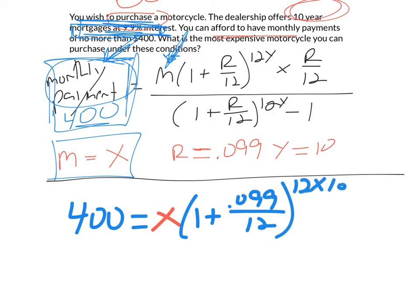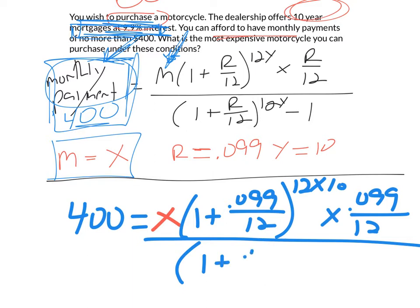so that's 12 times 10, times another R/12, so 0.099 over 12, all over (1 + 0.099/12) raised to the 12Y power, take away 1.